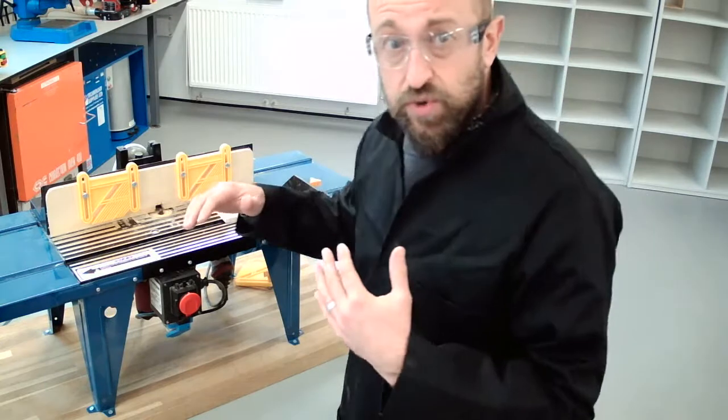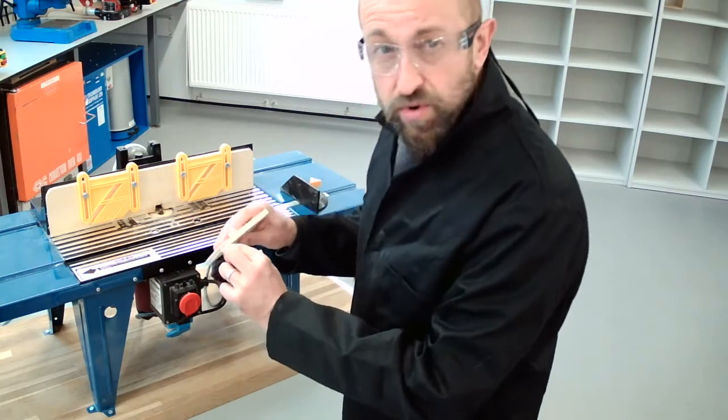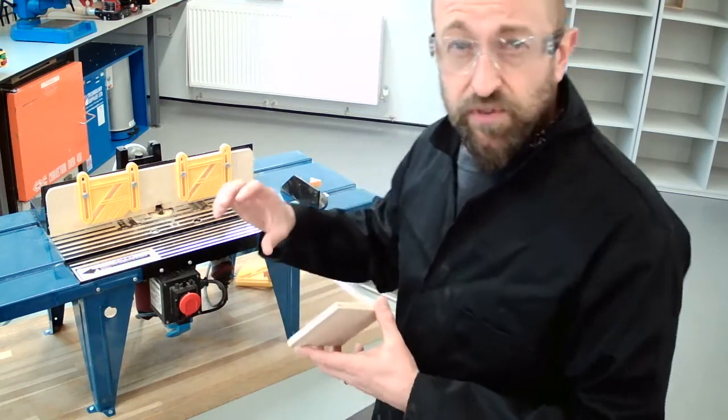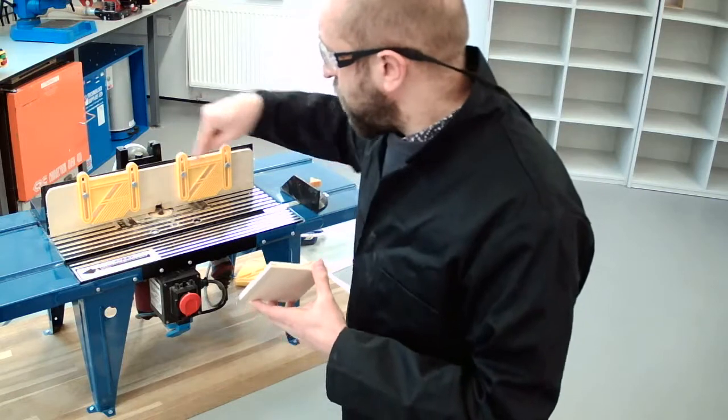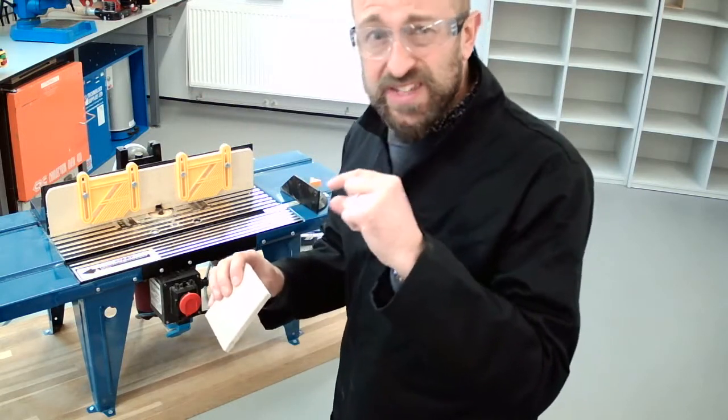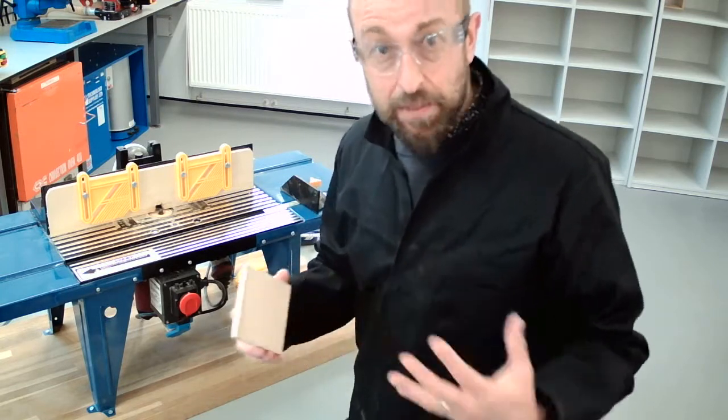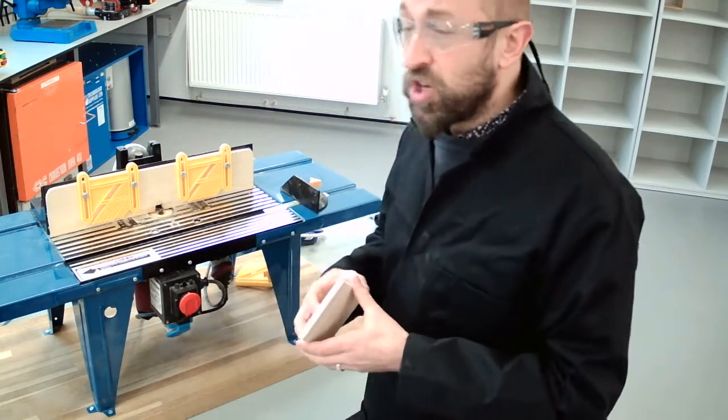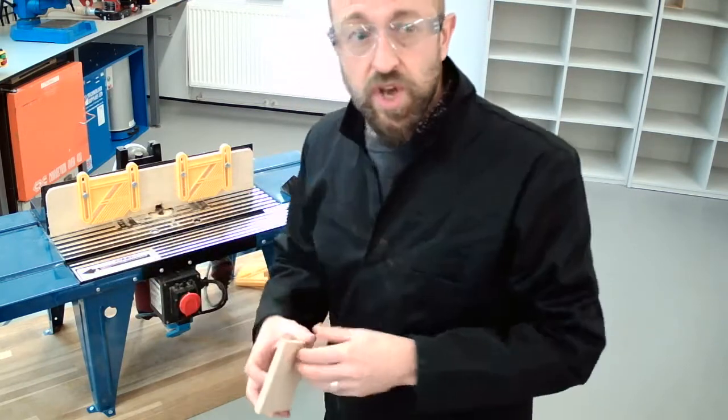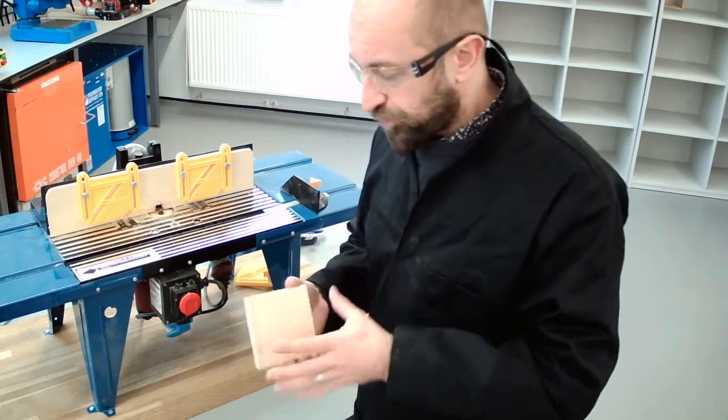I've already set the router up, so my cut depth is going to go halfway through our material. We would normally get a technician to set this up for us. But as a rule of thumb, whatever the diameter of the cutter is, we need to go half that in terms of the depth. So, if the diameter of our cutter is 10 millimetres, our maximum cut depth in one pass, a single slide over the cutter, would be half of that 10 millimetres, which would be 5 millimetres.